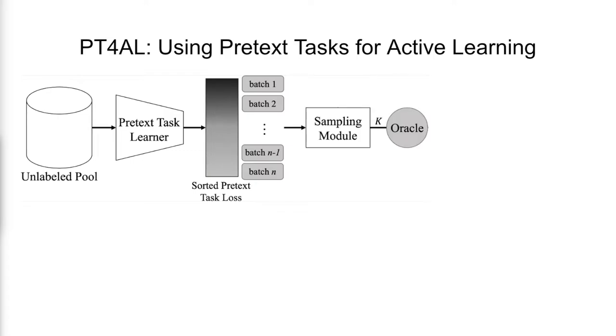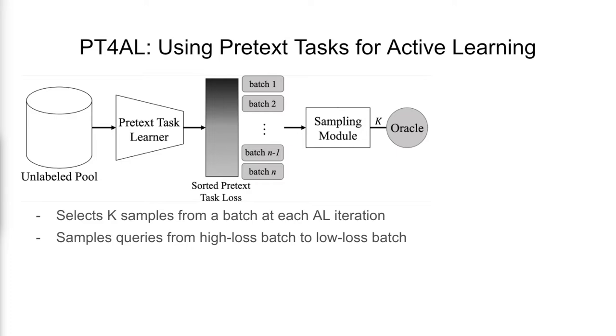Next, the sampling module is used to select k samples from a batch in each active learning iteration, starting from the highest loss batch and moving on to lower loss batches.